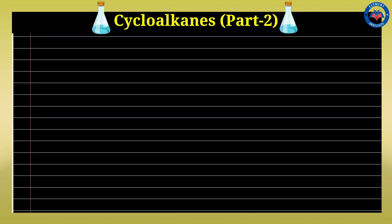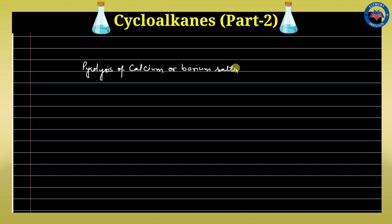In the last lecture, we discussed various methods of preparation of cycloalkanes. There are some other methods which I am going to discuss in this lecture. The next method is the pyrolysis of calcium or barium salts of dicarboxylic acids. We take the calcium or barium salts and strongly heat them, which first gives us the ketone.